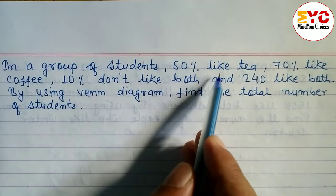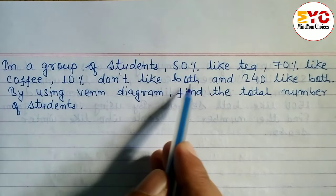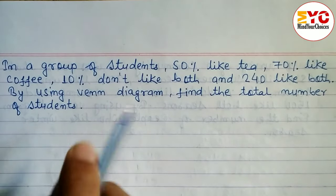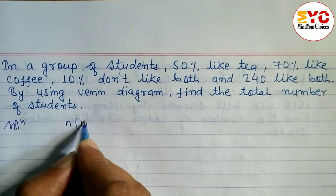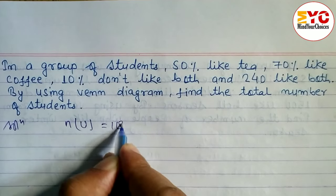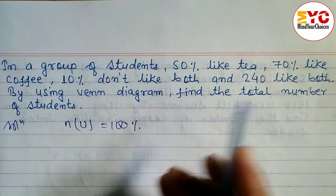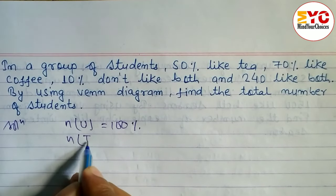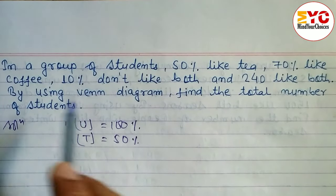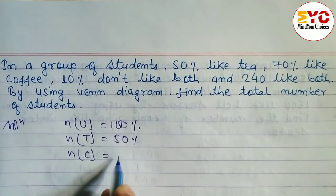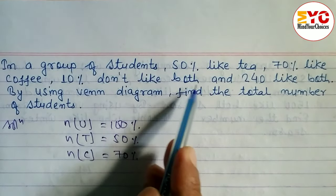In a group of students, 50% like tea, 70% like coffee, 10% did not like both, and 240 like both. Since the question is in the form of percentages, we let N(U) = 100%. So N(U) = 100%. Number of persons who like tea = 50%, number of students who like coffee = 70%, and 10% did not like both.